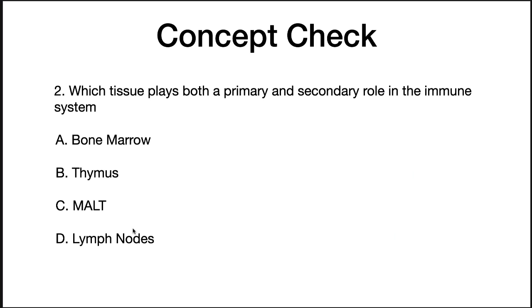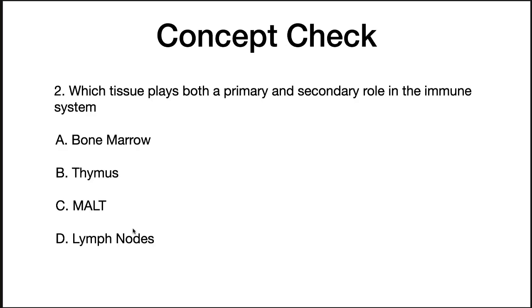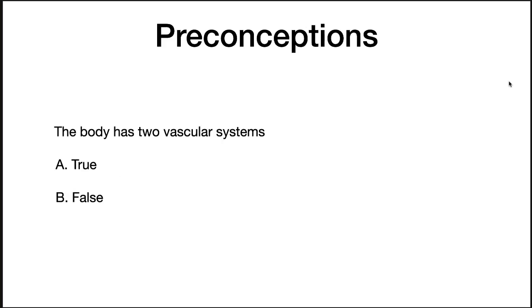Which tissue plays both a primary and secondary role in the immune system? The correct answer is MALT. Does the body have two vascular systems — true or false? The correct answer is true. It's called the lymph system, which is throughout your body and monitors it to check for infections. We'll talk more about that in later lectures.